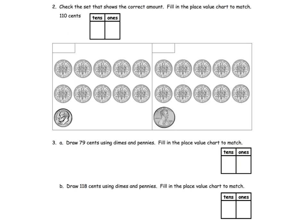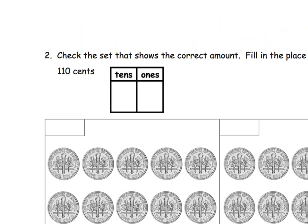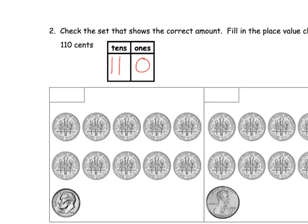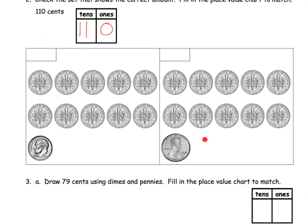So here we've got check the set that shows the correct amount, fill in the place value chart to match 110 cents. So, well, first off, if we want to fill in the chart, we want our students to know that that's going to be 110 cents. So we've got 11 tens and zero ones. Now it's possible your students may need to go down here and look at this first.